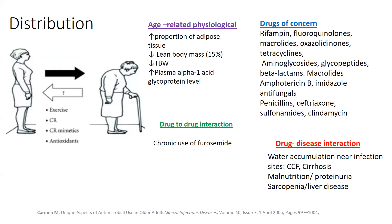Diseases such as congestive cardiac failure or cirrhosis can result in higher volumes of fluid accumulation at the site of infection, potentially diluting standard antibiotic doses. Conditions such as malnutrition, proteinuria, sarcopenia, and liver disease can decrease plasma protein or albumin levels, resulting in an increase in free antibiotic concentrations in plasma. This can be a particular problem with acidic antimicrobials, mainly penicillin, ceftriaxone, sulfonamides, and clindamycin.